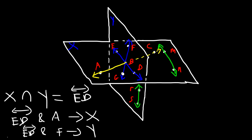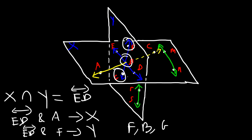Which points are coplanar with F, B, and G? F, B, and G determine plane Y. So the points that are coplanar with these three are the other points found in plane Y: E, D, R, and S.